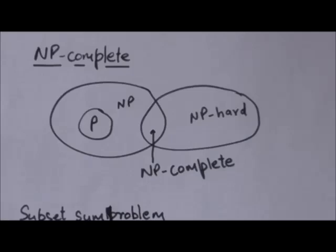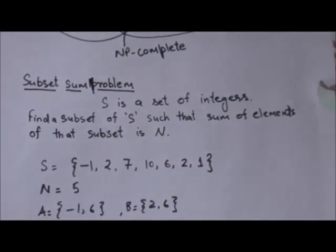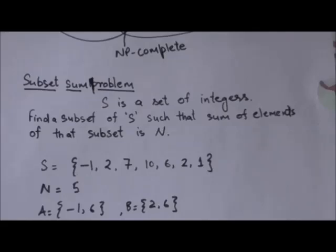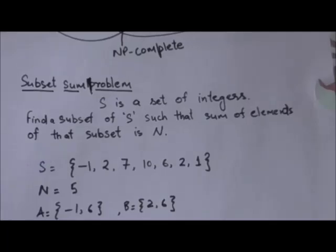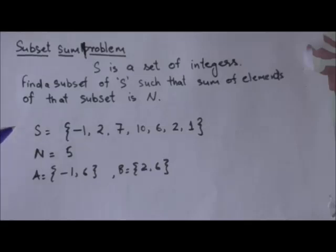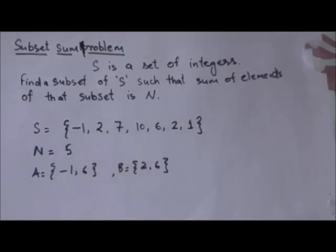An example of an NP complete problem is the subset sum problem. In the subset sum problem, a set S of integers is given, and we have to find a subset of set S such that the sum of elements of that subset equals a particular number n. For example, suppose set S is a set of integers and we have to find a subset whose elements sum to 5.